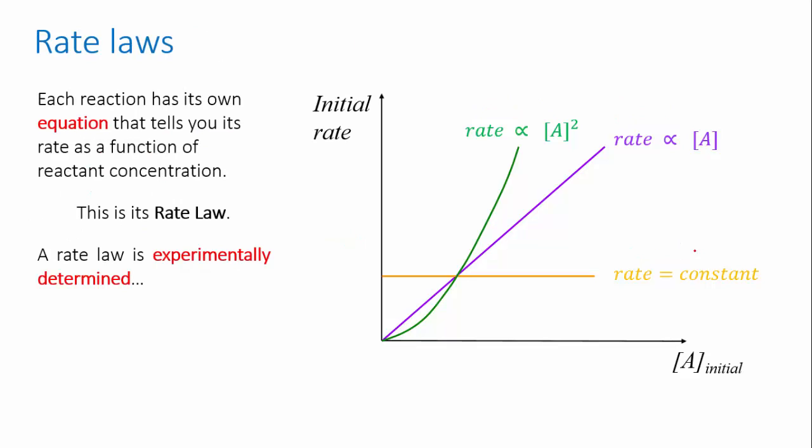We can turn these proportionalities into proper equations that describe how the rate of the reaction depends on the concentration of its reactants. This equation is called the rate law for that reaction. Each reaction has a different rate law, and each has to be determined by running rate experiments — you can't pull it out of thin air.